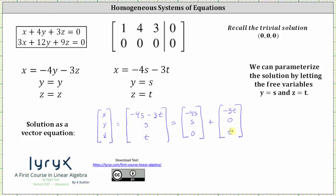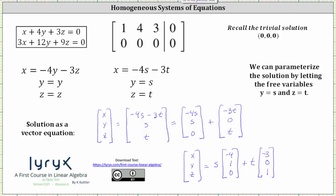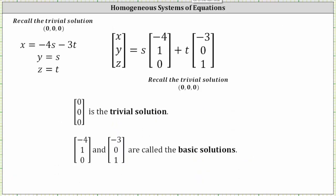Factoring out s and t respectively, the solution becomes [x, y, z] = s · [−4, 1, 0] + t · [−3, 0, 1]. When s and t are both zero, we have the trivial solution expressed as a column matrix or vector. The column matrices [−4, 1, 0] and [−3, 0, 1] are called the basic solutions.